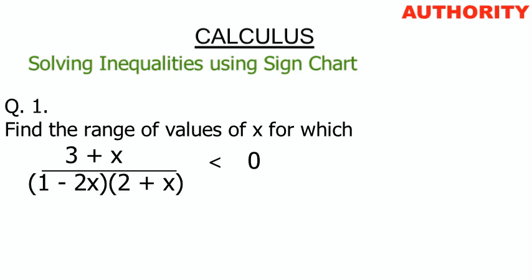The question for today: find the range of values of x for which (3 + x) divided by [(1 - 2x)(2 + x)] is less than zero.